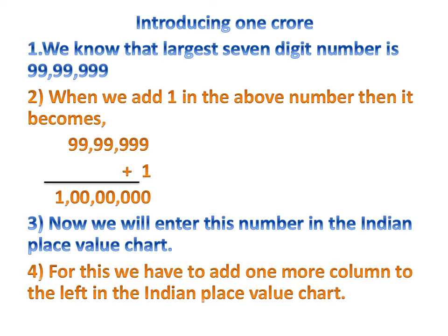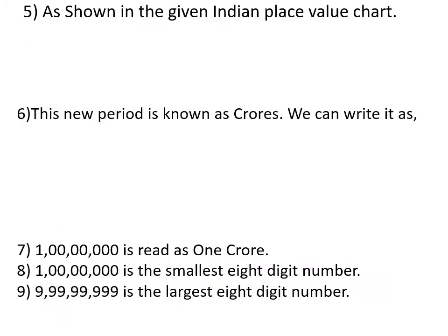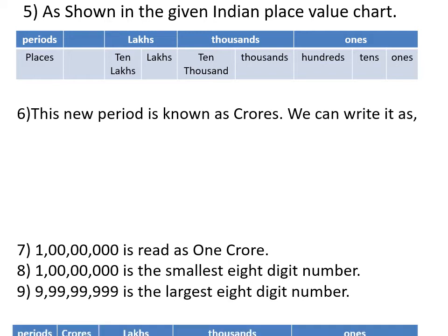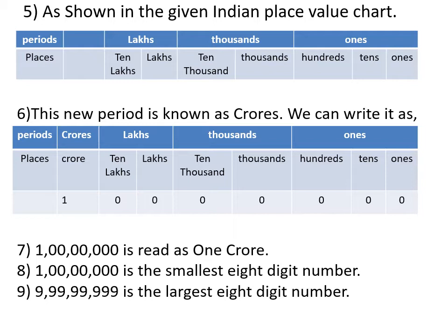We will enter this number in the Indian place value chart. For this, we add one more column to the left of the place value chart. In the table shown, to the left of the lakhs period, I have left one blank column. This new period is known as crores. Now the periods are: crores, lakhs, thousands, and ones. The places are: crore, ten lakh, lakh, ten thousand, thousand, hundred, tens, and ones. This eight digit number we can read as one crore — the smallest eight digit number.